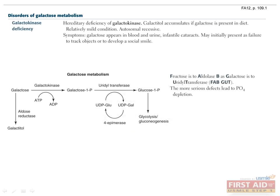Galactokinase deficiency is an autosomal recessive deficiency of galactokinase. This prevents the phosphorylation of galactose and instead causes it to be converted into an alcohol form, galactitol. This is catalyzed by the enzyme aldose reductase, which, as I'll discuss in the next slide, also converts glucose to sorbitol.